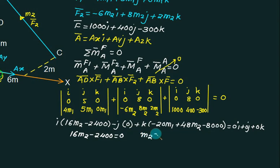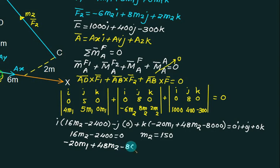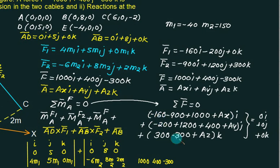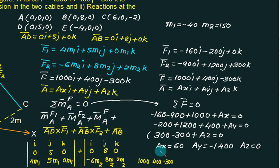Solving: from 16m2 minus 2400 equals zero, m2 equals 150. Substituting into minus 20m1 plus 48 times 150 minus 8000 equals zero gives m1 equals minus 40. So F1 bar equals 4 times minus 40 equals minus 160i. Using sigma F equal to zero and comparing coefficients of i, j, k, we solve for Ax, Ay, Az. Final answers: Ax equals 60 N, Ay equals 1400 N, Az equals 0. Magnitude of A equals under root of 60 squared plus 1400 squared, which is very close to 1400 N.